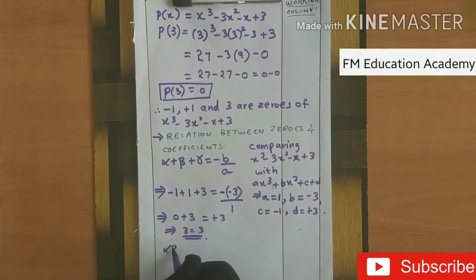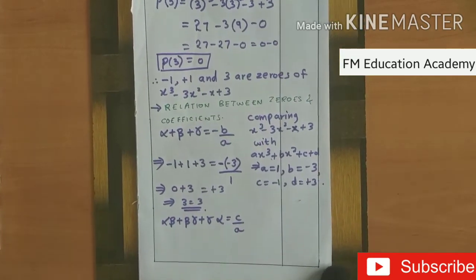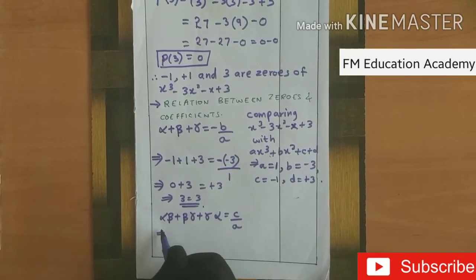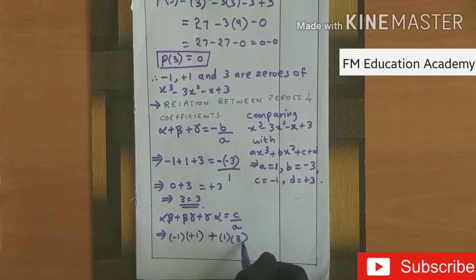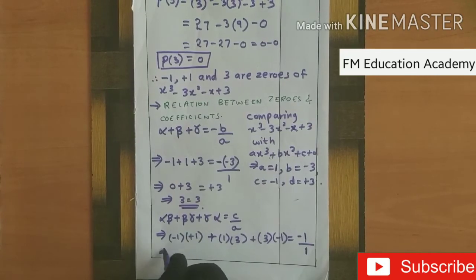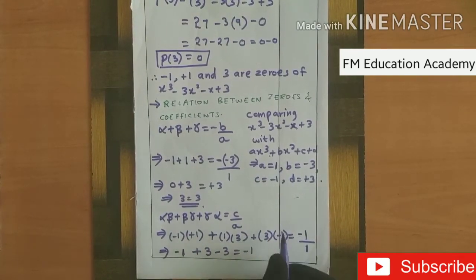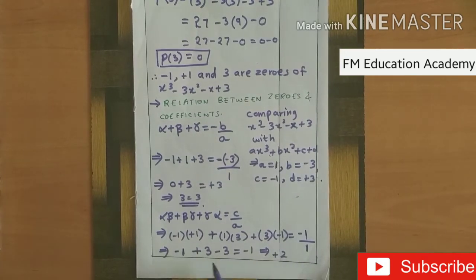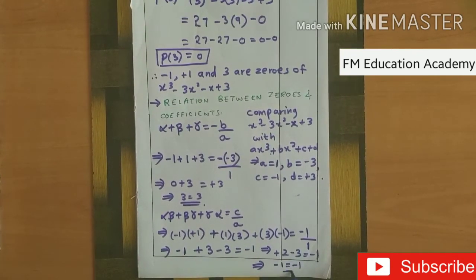Now the sum of products of zeros taken two at a time: alpha·beta plus beta·gamma plus gamma·alpha equals c by a. Substituting: (minus 1)(plus 1) plus (plus 1)(3) plus (3)(minus 1) equals c divided by a. That gives minus 1 plus 3 minus 3 equals minus 1 by 1. On the left side: minus 1 plus 3 is plus 2, and plus 2 minus 3 is minus 1. So minus 1 equals minus 1; LHS equals RHS.